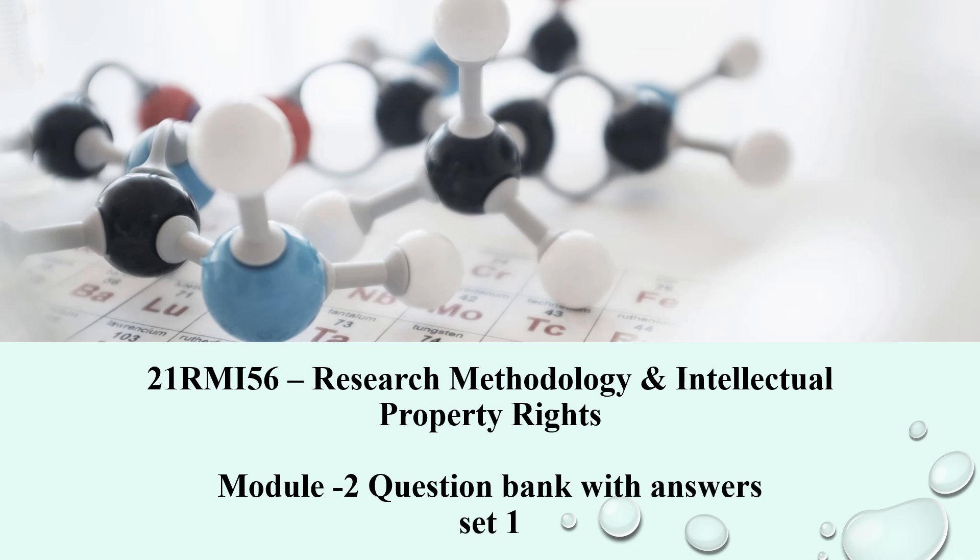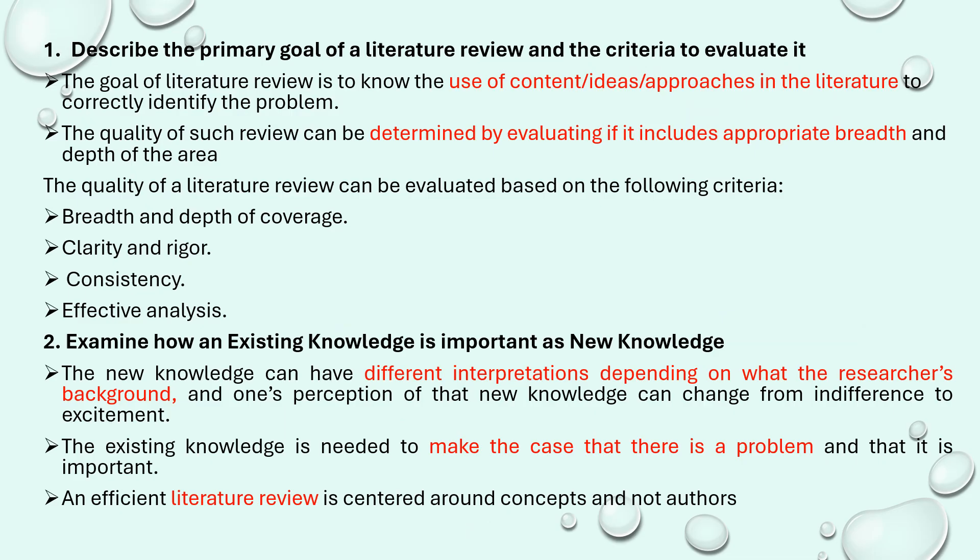This is Module Two, dealing with literature survey and existing new knowledge — question bank with answers, first set. First question: describe the primary goal of a literature review and criteria to evaluate it. The primary goal of a literature review is to create an idea by approaching many existing technologies or methodologies to identify which problem can be stated as a problem statement. You search to form a hypothesis and understand how existing knowledge can be extended with new knowledge.